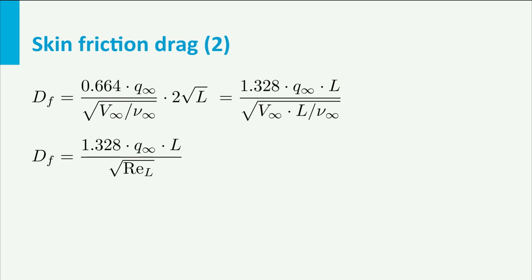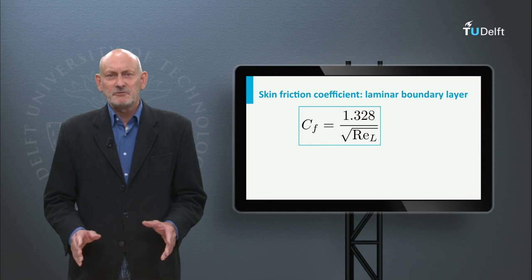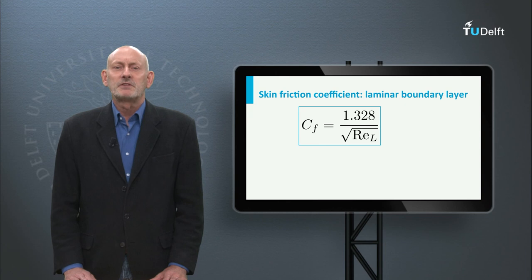Now let us define the skin friction drag coefficient. Cf is the drag force divided by q-infinity times S. This is df divided by q-infinity times L times 1, because we have a width of the flat plate of 1 meter. Writing Cf with the result of the drag force calculation, we get Cf equals 1.328 divided by the square root of ReL, the Reynolds number based on the flat plate length.